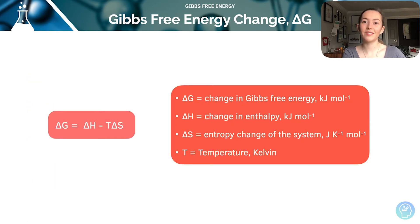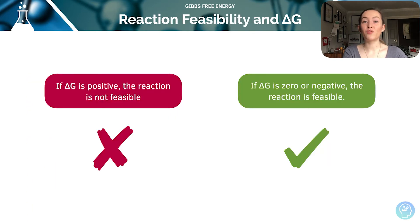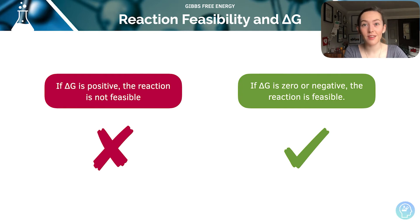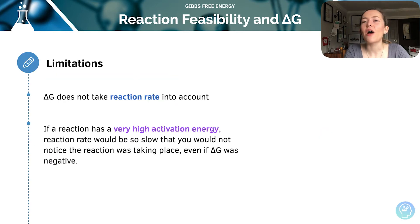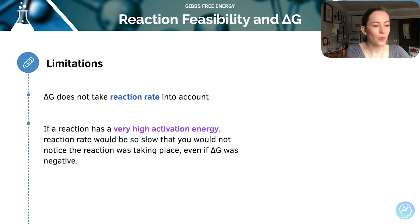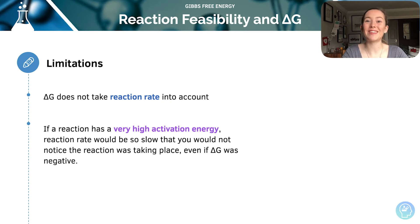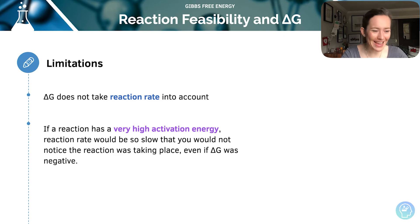Here's our equation and their units. With our Gibbs free energy change, if it is a positive value then the reaction is not feasible; if it's a negative value then our reaction is feasible. However, there are some limitations when using it as a tool to work out a reaction's feasibility. It does not take the rate of reaction into account. So if a reaction has a very high activation energy, the reaction rate would be so slow that you'd not notice the reaction was taking place, even if the Gibbs free energy value was negative.